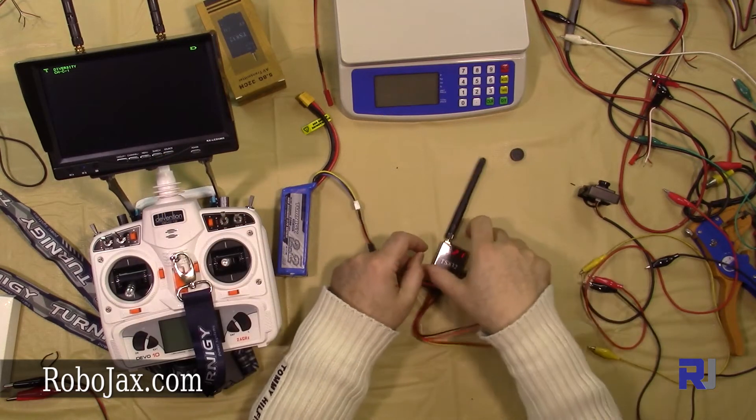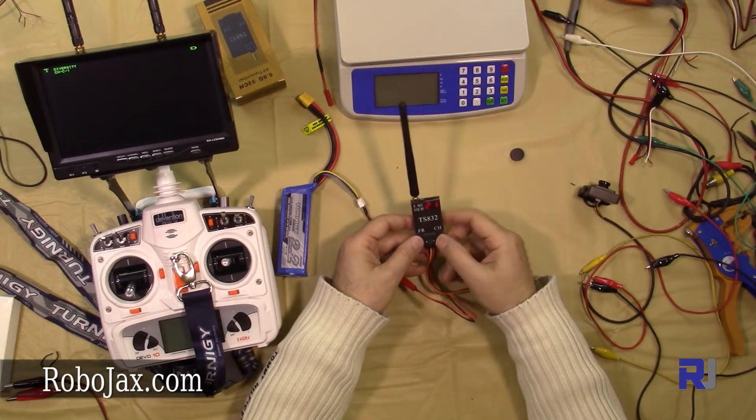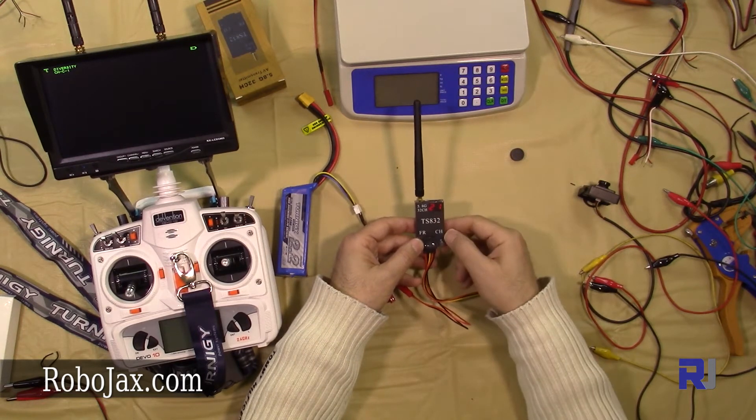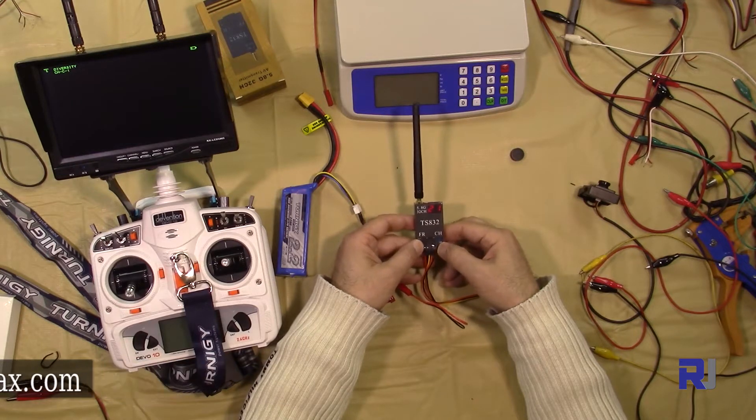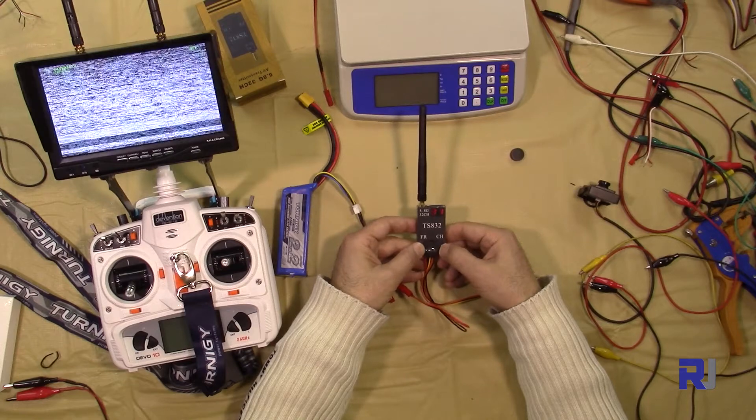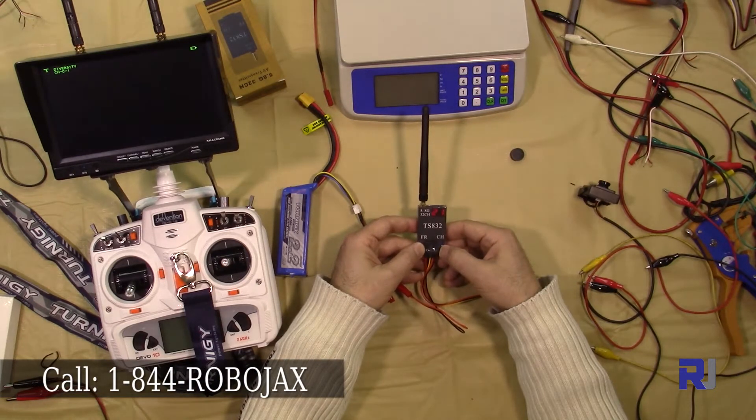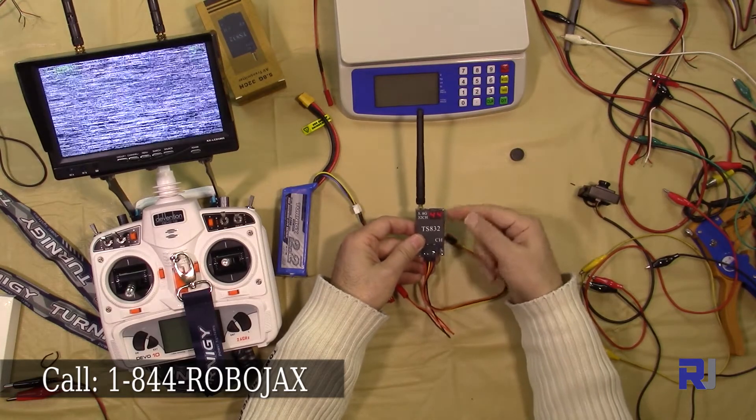This transmitter is very nice. It has a seven-segment display and there are two buttons that you can use to change the channel. With the first one you can change the first digit of the channel.